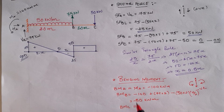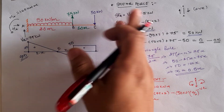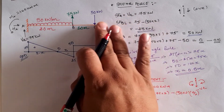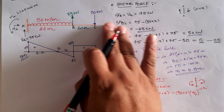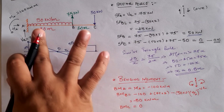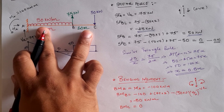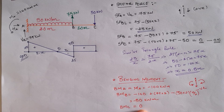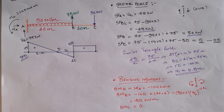Exactly at location C, observing the right-hand side, there is no beam or load to the right of C, so the bending moment must be equal to zero. This can also be verified by calculating from the left-hand side, which also gives zero. We now draw the bending moment diagram using these values.